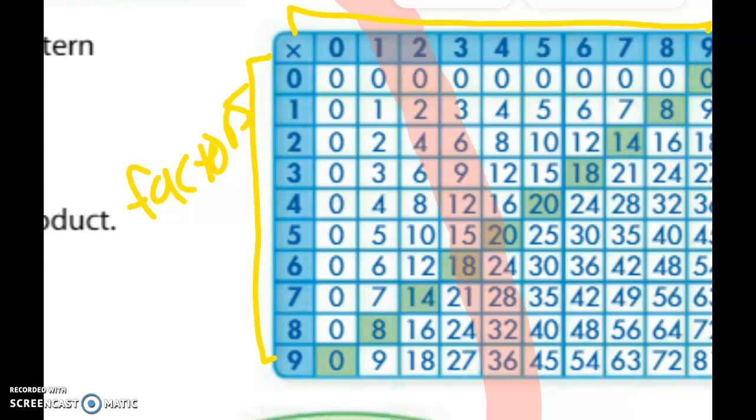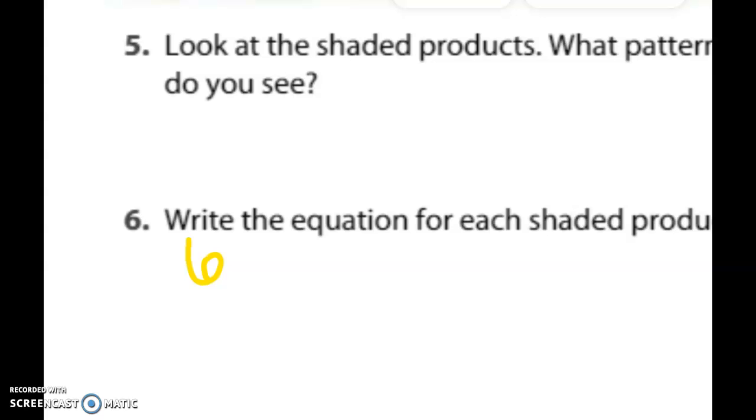So if I am looking at the shaded number eighteen, I can draw a line to find the two products. What two numbers multiply to get eighteen? Six times three. Six times three equals eighteen.